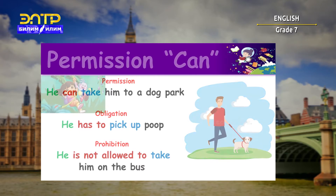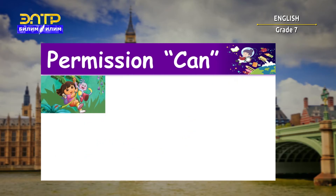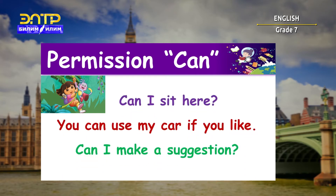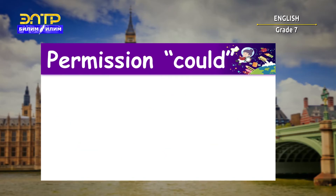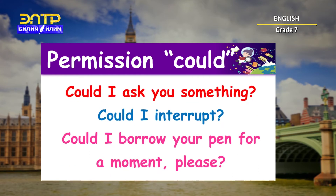We often use verbs with modal meanings to talk about permission and obligation. We can use the modal verb 'can' to ask for and give permission. For example: Can I sit here? You can use my car if you like. Or, can I make a suggestion? We also use 'could' to ask for permission, but not to give it. Could is more formal and polite than 'can'. For example: Can I ask you something? Could I interrupt? Could I borrow your pen for a moment, please?